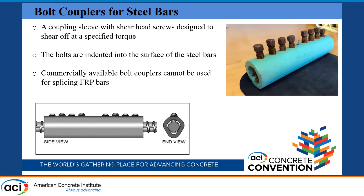In this study, shear bolt couplers were selected to investigate the performance of spliced FRP bars. The picture shows commercially available shear bolt couplers used for splicing steel bars. These consist of a coupling sleeve with shear head screws designed to shear off at a specific torque. As you can see in the side and end views, the bolts are indented into the surface of the steel bars. These commercially available bolt couplers cannot be used for splicing FRP bars because of the brittle surface of the FRP bars.